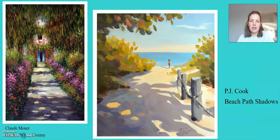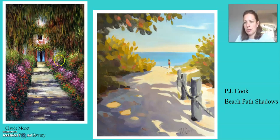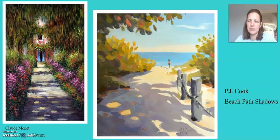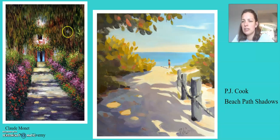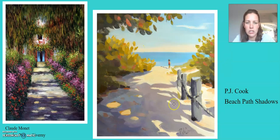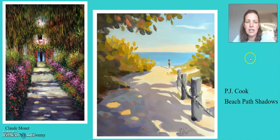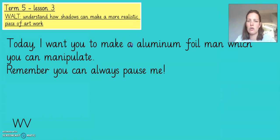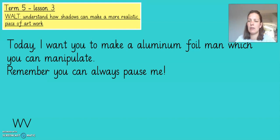Here we have some artists who do use shadows in their work. The colourful one with the purple flowers is painted by Claude Monet and is called 'Garden Path at Giverny.' You can see quite clearly the shadows created by the tree hanging over the pathway. And in this one by PJ Cook, 'Beach Path Shadows,' you can see the shadow of the small child or woman at the end, and also the shadow cast on the path down to the beach. Adding shadows to our work makes it a lot more realistic — it gives an effect of depth and makes objects feel like they are really there.